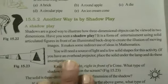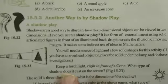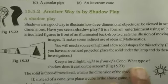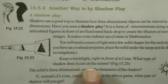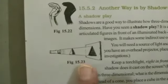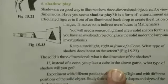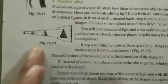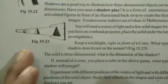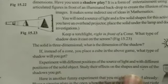You will need a source of light and a few solid shapes for this activity. Keep a torch right in front of a cone — you will get a triangle-shaped shadow on the screen. If instead of a cone you place a cube, you may get a square or rectangle shadow shape depending on its orientation.